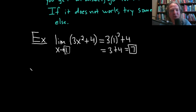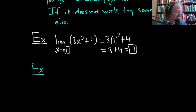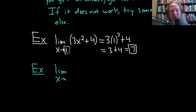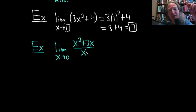Let's do another one. Here's a harder one: the limit as x approaches zero of x squared plus 3x over x. It's still pretty easy if you already know calculus, but there's a point to be made here.